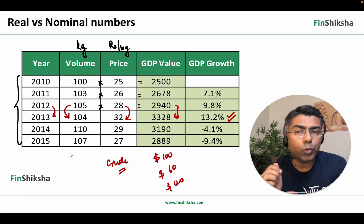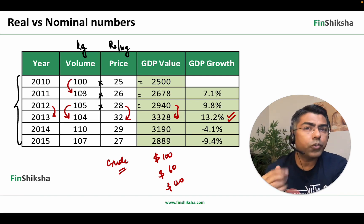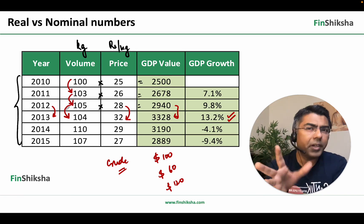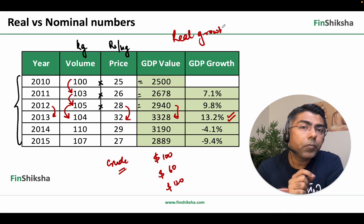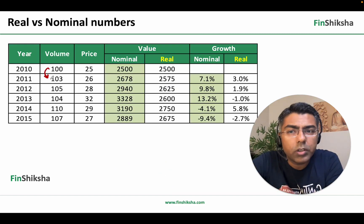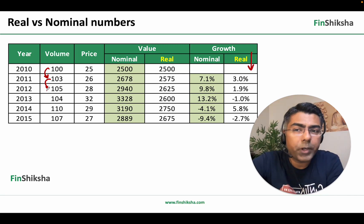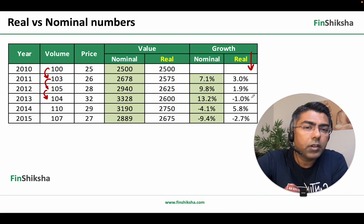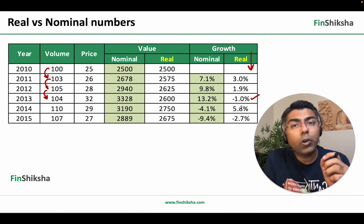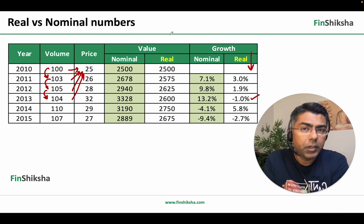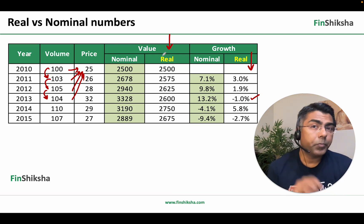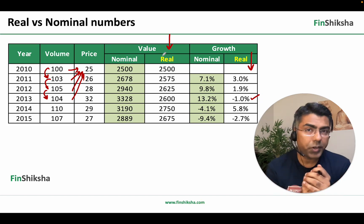One thing you can do is directly compare the output. So 100 going to 103 is a 3% movement, and 103 going to 105 is approximately a 2% movement — that is the change in output and that would be your real growth number. If you look at the change in output, that would be your real growth number. You'll realize that between 2012 and 2013, your real output is minus 1%. You can also fix the price — multiply the output of each year with the price of the first year to get the real output, then find the difference. This would give you a better estimate of what's happening with the output of the country.